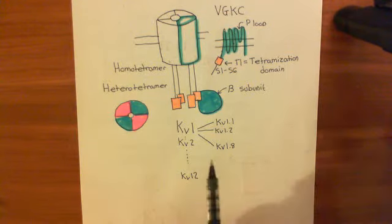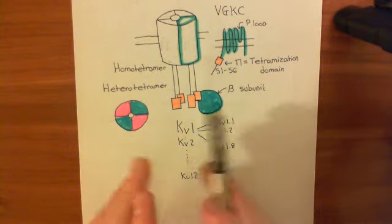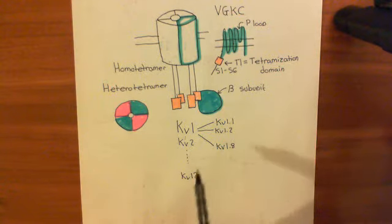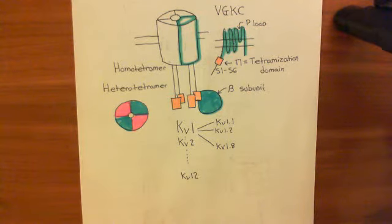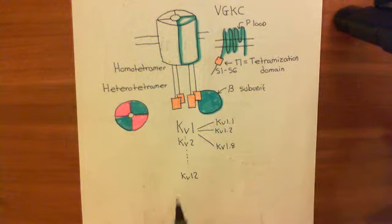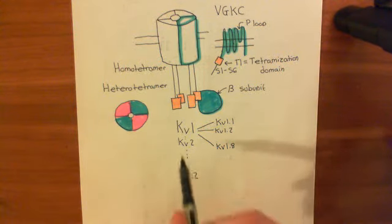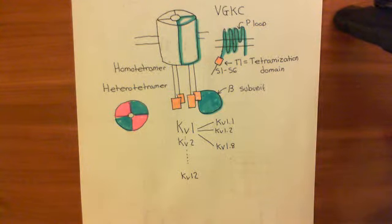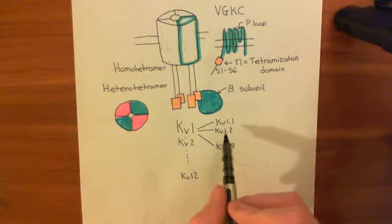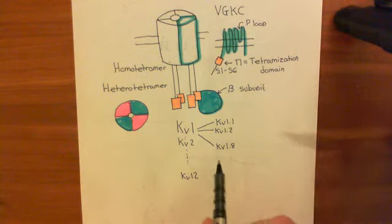You can make homotetramers with all of these alpha subunits. Every single one of these alpha subunits can come together and form a pore where it fills all four sockets. So we can make 40 different voltage-gated potassium channels that way. When you make heterotetramerization, it's more complicated. You cannot mix and match between different families — this is actually why we grouped them into families this way, because it helps us understand heterotetramerization. You can only form heterotetramerization between genes that are in the same family.